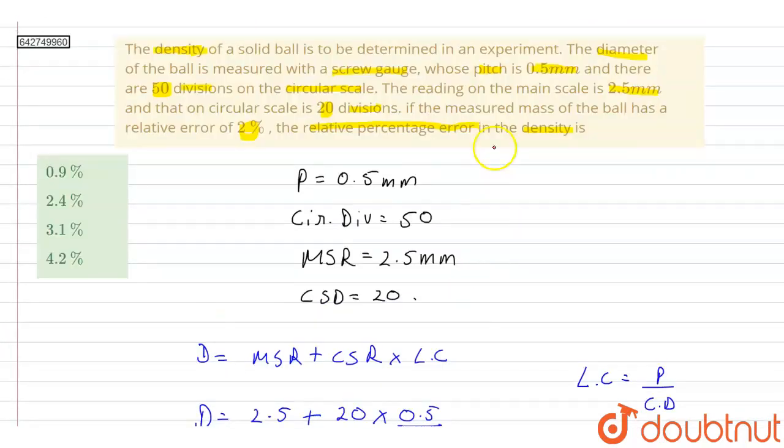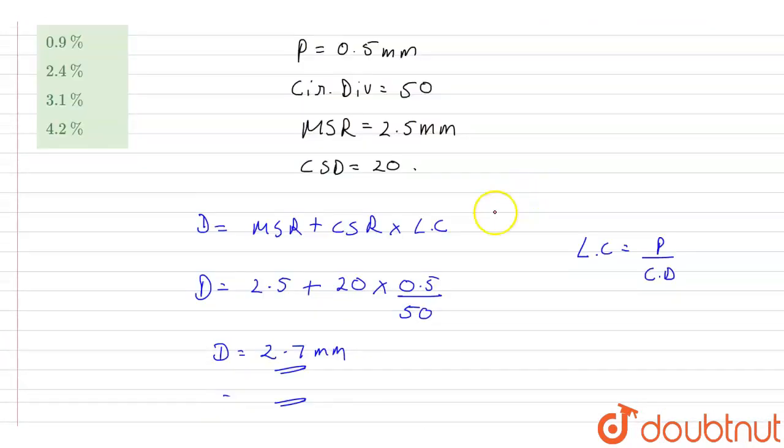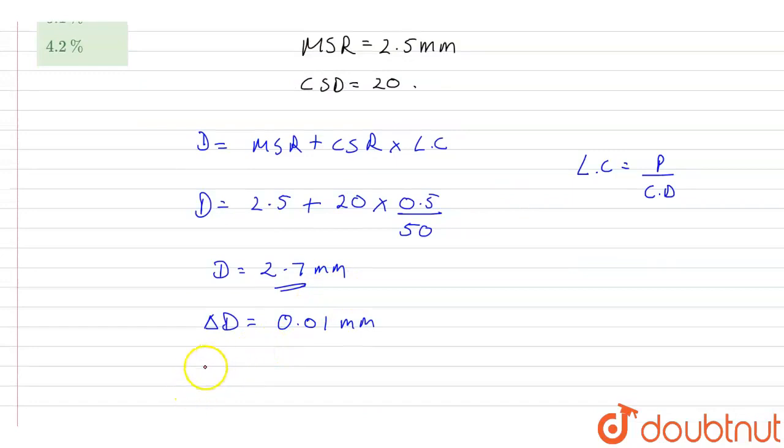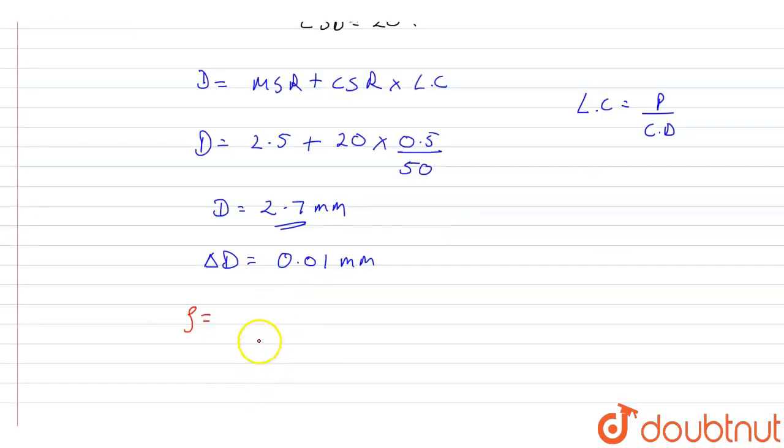Now in the question we have to find relative percent error of density. And the formula of density is given as density equals mass upon volume. And this is a solid sphere so it will be mass upon 4 by 3 pi times D by 2 cubed. So here we can see that density depends on the first power of mass and also the third power of diameter.